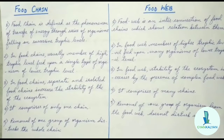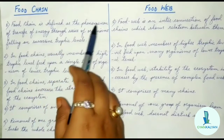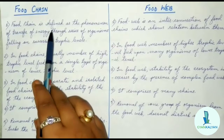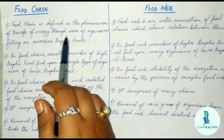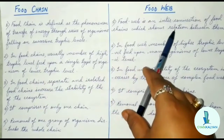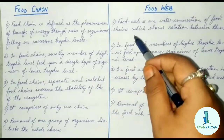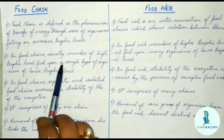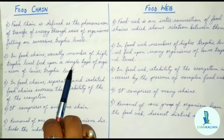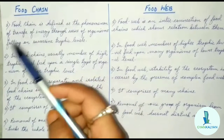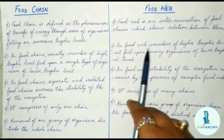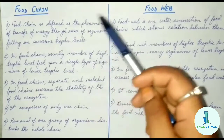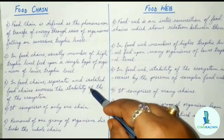Now let us discuss the differences between food chain and food web. Food chain is defined as the phenomenon of transfer of energy through a series of organisms falling on successive trophic levels. A food web is an interconnection of food chains which shows the relation between them. In a food chain, members of a higher trophic level feed upon a single type of organism of a lower trophic level. In a food web, members of higher trophic level feed upon many organisms of lower trophic level.